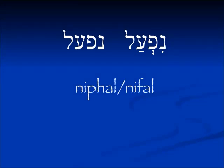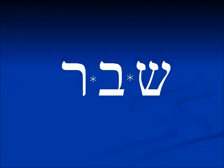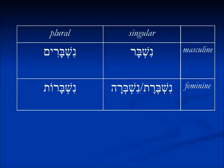Today we're going to cover the last of the seven binyanim, which is the nifal, highlighted there in gold. The nifal is a passive form, meaning the subject of the sentence receives the action — the ball was thrown by me, the book was written by him. We're going to examine the root shin-bet-resh, which means 'to break' in the pa'al form. In the nifal form it means something is being broken. The masculine singular is nishbar, the feminine singular is nishberet (or nishbera in Tanakh), and the plurals are nishbarim and nishbarot. The participle form will always begin with nun in the nifal.